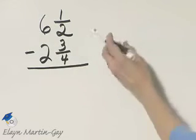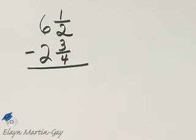This is the total length, and this is the length of the piece that we're cutting from it. So let's subtract these two mixed numbers.